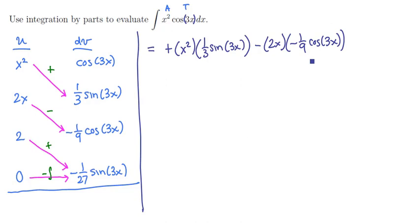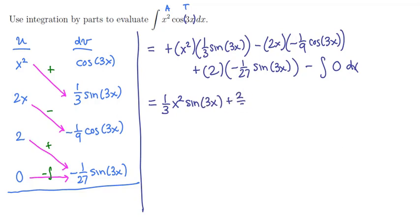Now we read the third arrow off, that's a positive arrow, so plus 2 times negative 1/27 the sine of 3x. And then we'll read off that last arrow, that's a negative integral of 0 times stuff. So now let's just clean these things up. We're going to have 1/3 x squared times the sine of 3x. The next term we have a negative negative, so positive 2/9 x times the cosine of 3x. Next we're going to have negative 2/27 the sine of 3x. And last we're integrating 0, which is a constant. So there's our answer.